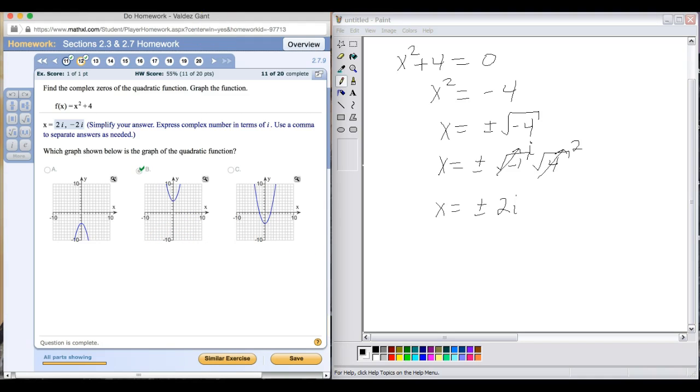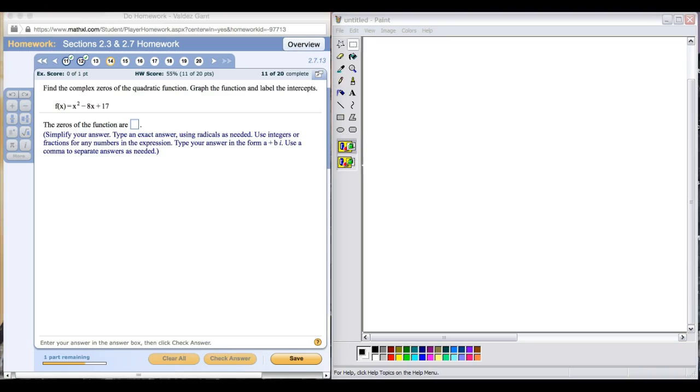We'll move on to our next question. We still have this quadratic function, and we want to find the zeros of it. We can look at the discriminant and figure out what the solutions are going to look like. We know that our A is 1, our B is negative 8, and our C is 17.